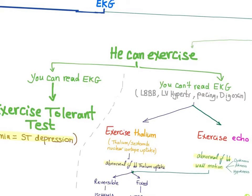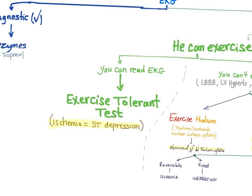If you can read the EKG, you do the exercise tolerance test. Exercise tolerance test means you make the patient run on the treadmill, and if you see ST depression in the EKG, that's ischemia.